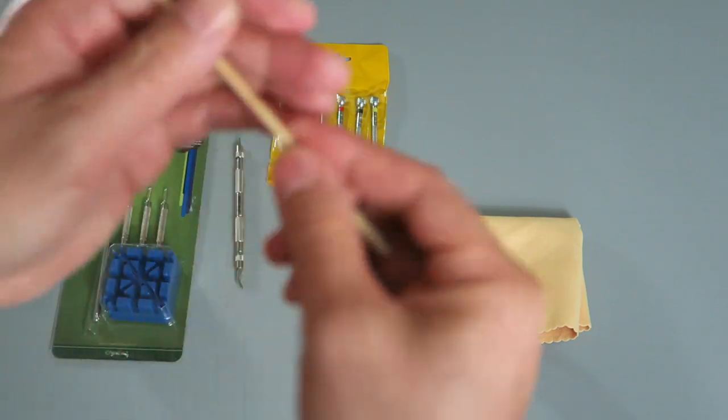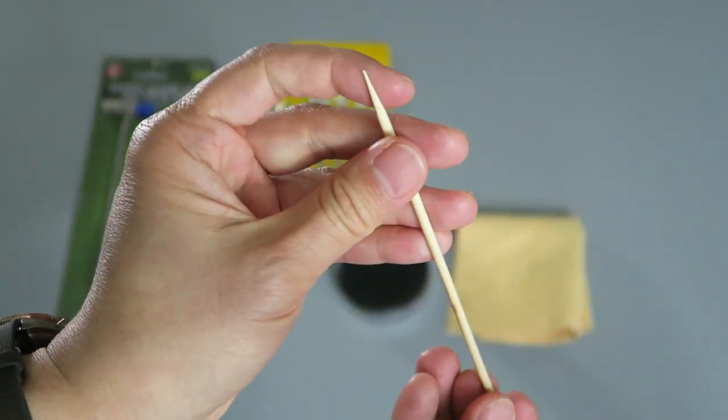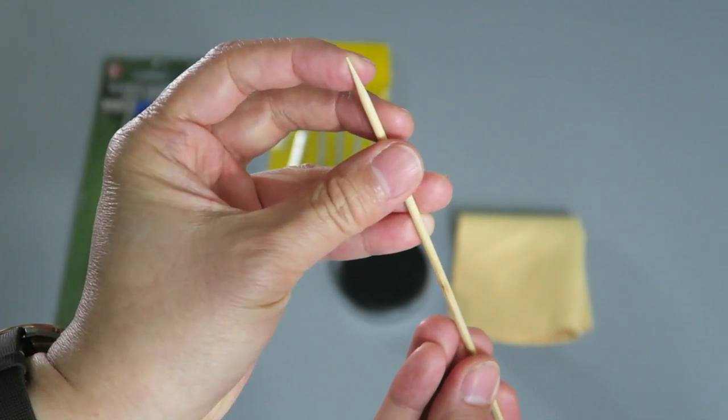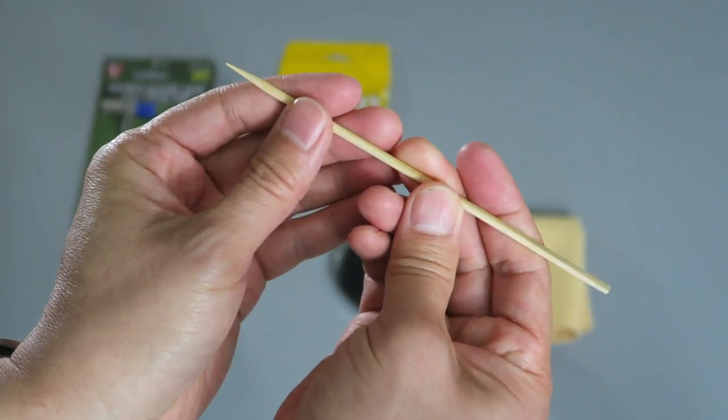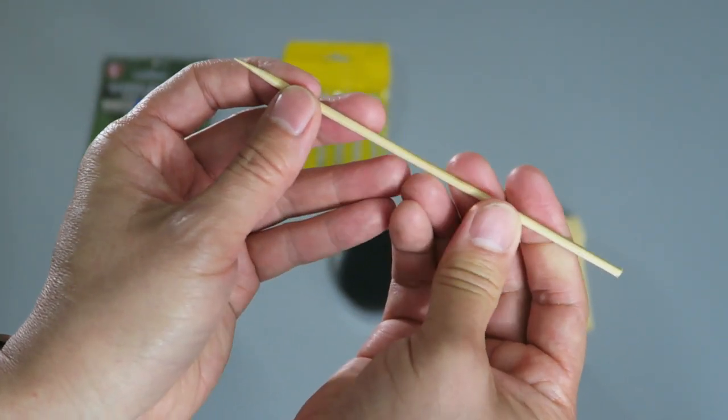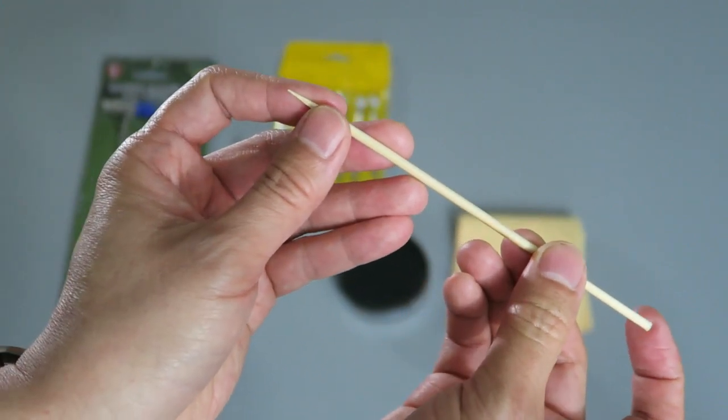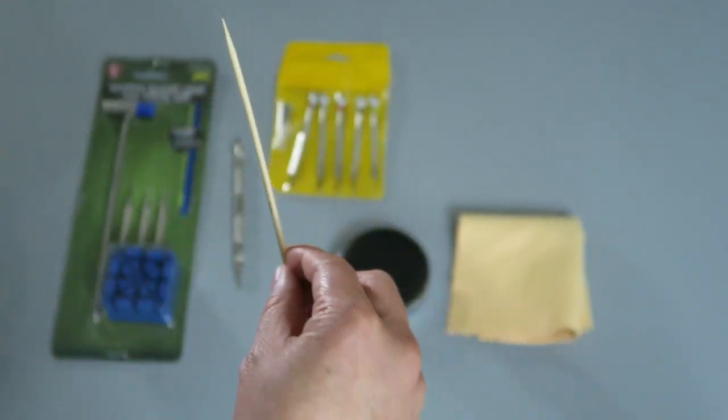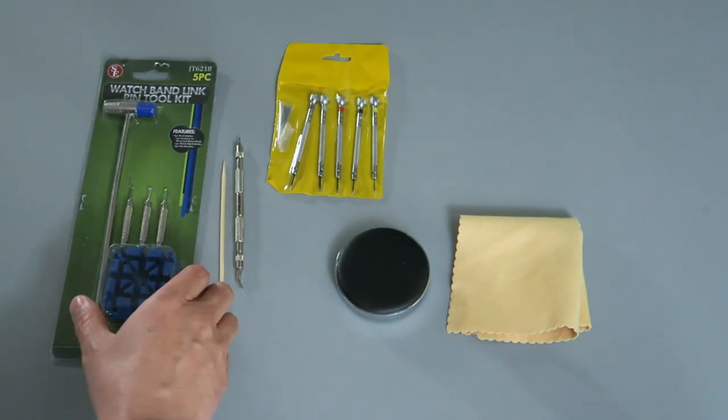Going along those same lines, I have here a bamboo shish kabob stick and this enables you to push out link pins of metal bracelets and especially gold bracelets without having to use metal on metal, and that can be important if you have a soft metal like gold.